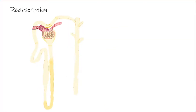Let's look at reabsorption in general first. Approximately 70% of reabsorption of substances occurs in the proximal tubule. About 25% of reabsorption occurs in the thick portion of the ascending limb of the loop of Henle, which accounts for about 95% of reabsorption. For the most part, this is what we refer to as an unregulated process.